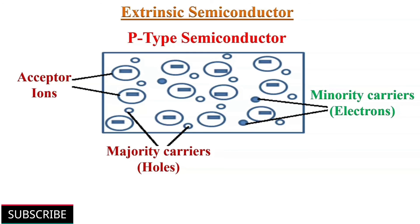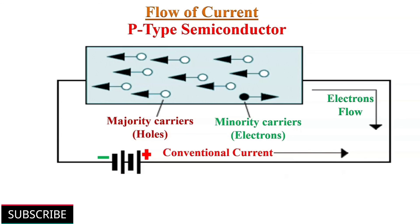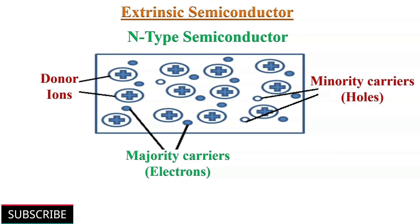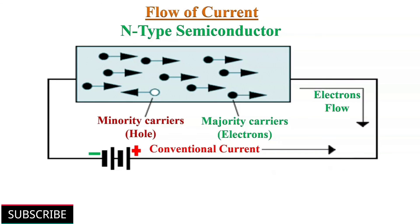In p-type semiconductors there is an excess of holes, so holes are the majority carriers and electrons are the minority carriers. When voltage is applied to a p-type semiconductor, holes are attracted towards the negative terminal while electrons are attracted towards the positive terminal, but since electrons are fewer, the majority of current is due to holes. In n-type semiconductors there is an excess of electrons, so electrons are majority carriers and holes are minority carriers. When voltage is applied, electrons are attracted towards the positive terminal and holes towards the negative terminal, and the majority of current flow is due to electrons.